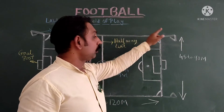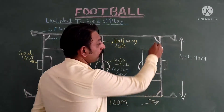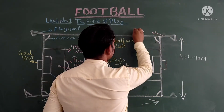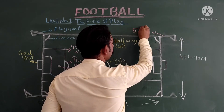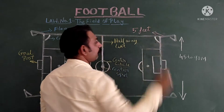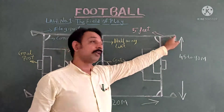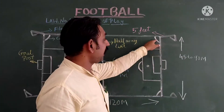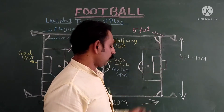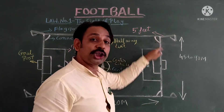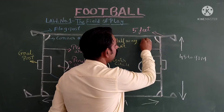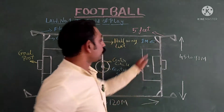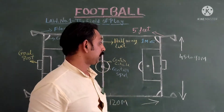Let us start from the flag post. From the ground, the height of the flag post is 5 feet. Then we have an arc at the corner, and this corner arc measurement is 1 meter.